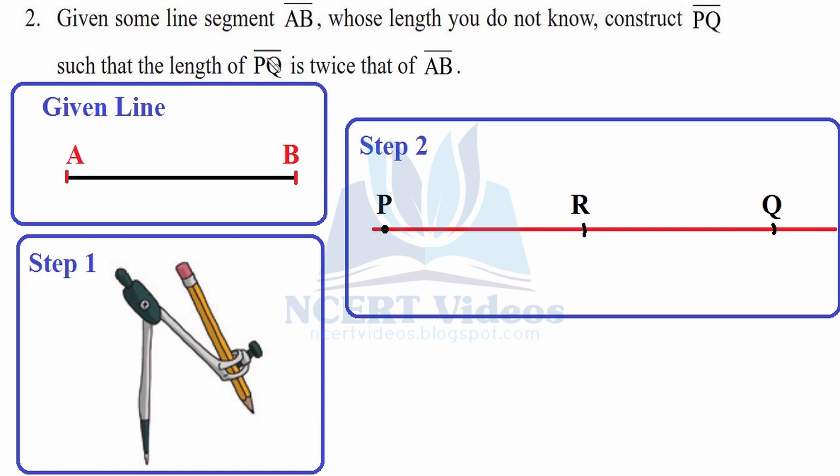Second, given some line segment AB whose length you do not know, construct line segment PQ such that the length of PQ is twice that of line segment AB. So you are given this line AB. You don't know its measure, so now you have to grab your compasses and put the needle at A and extend it to B.